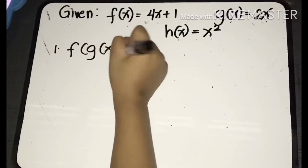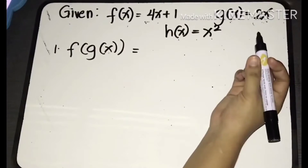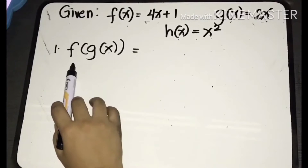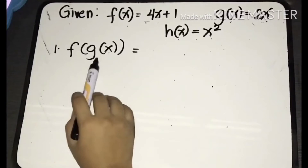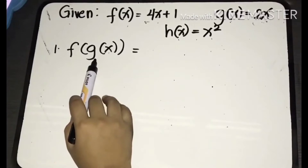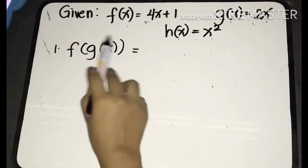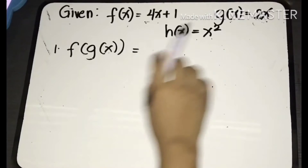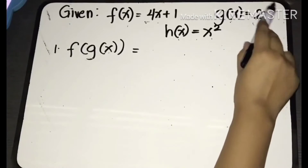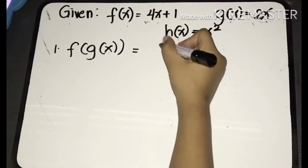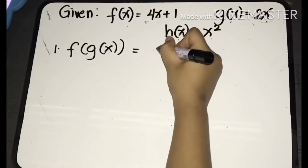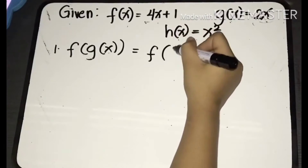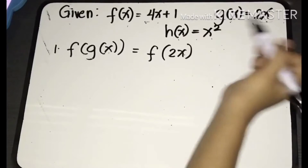The first thing to do is look at the given. What is the function inside the parentheses? It's g of x, and we are going to substitute the value of g of x, which is 2x. Substituting the value, just copy f — so we have f of 2x.